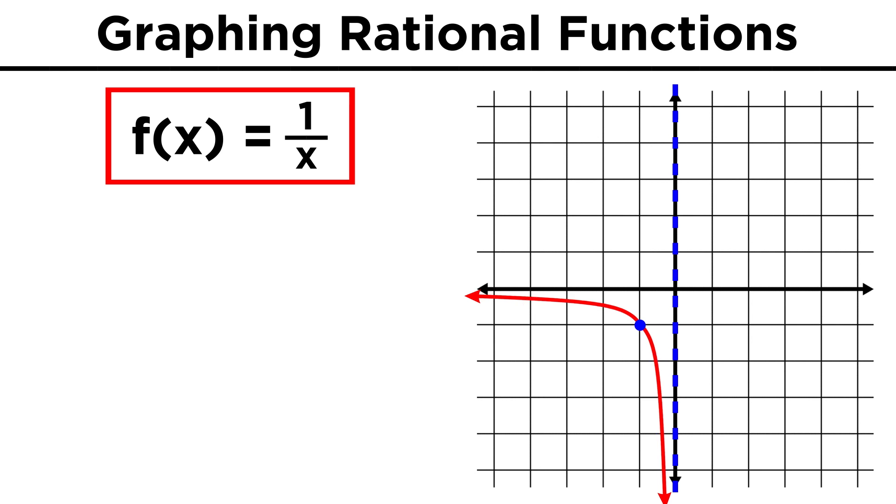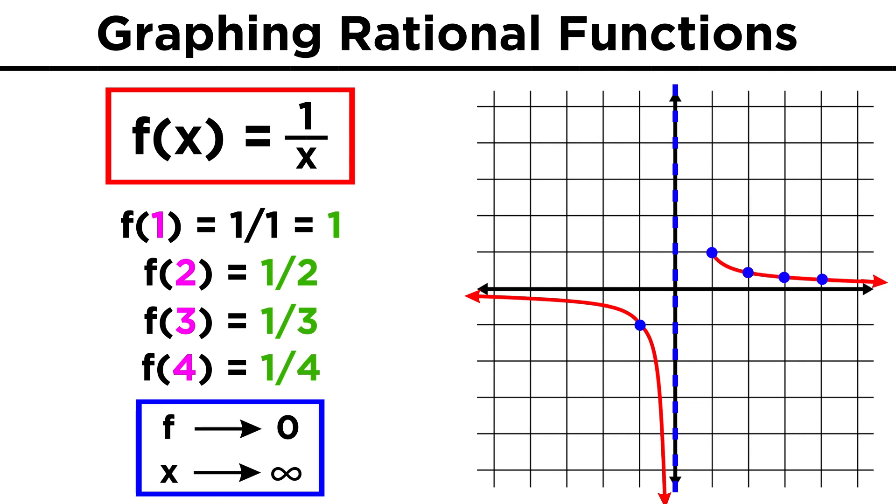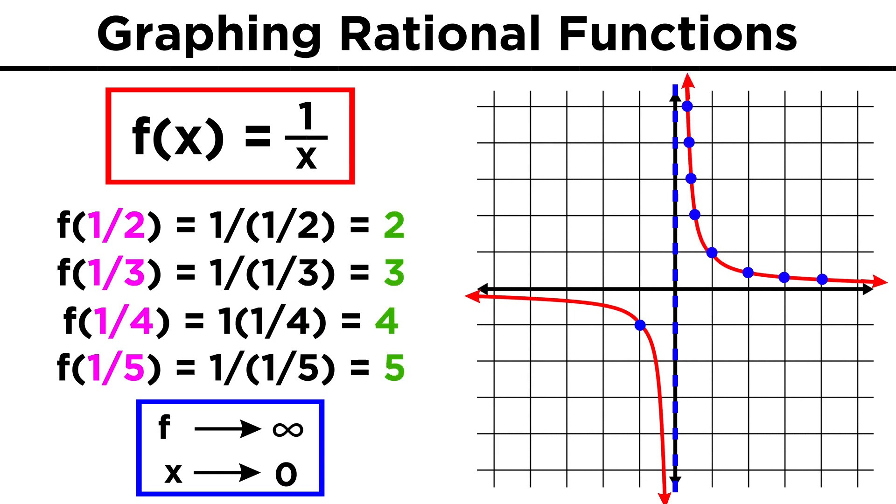On the positive side, we get something similar. Plugging in one, we can see that one one is part of the function. Then with bigger numbers, we get closer and closer to zero, so that gives us this behavior, approaching zero as x gets infinitely large. And plugging in fractions of one, it brings the function closer and closer to infinity as x approaches zero, so that will look like this.